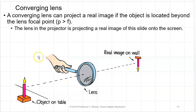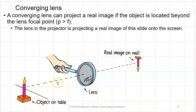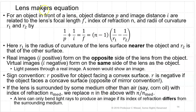A converging lens can project a real image if the object is located beyond the focal point, just like for the concave mirror, so P is greater than F. If you're looking at a movie projector, it projects a real image of the slide onto the screen. Real images are often upside down — how does a projector get around that? They have a mirror or something to turn the image upside down before it gets to the lens, and upside down twice is right-side up.